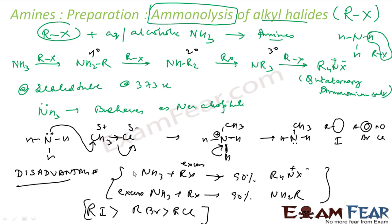This is my ammonolysis of alkyl halide where you have ammonia. You react with haloalkanes and you get a mixture of products. This happens at 373 Kelvin. Here, NH3 behaves as a nucleophile. This is my reaction mechanism. There is a disadvantage of this process. You get a mixture of 1 degree, 2 degree, 3 degree and quaternary ammonium salt. But if you use excess R-X, you get 90% of this ammonium salt. If you use excess ammonia, you get 90% of this 1 degree amine.